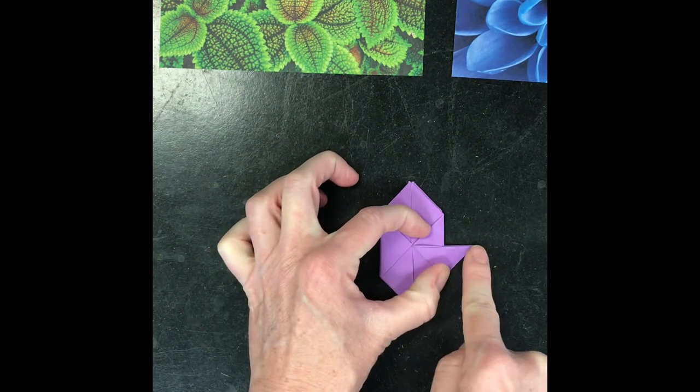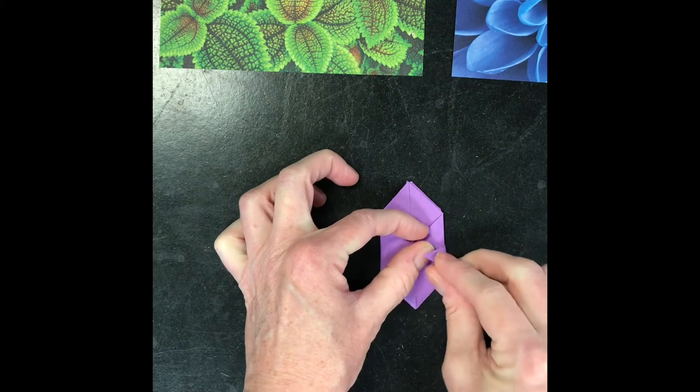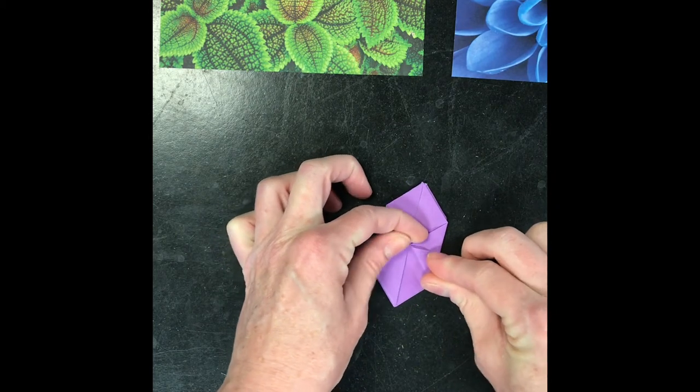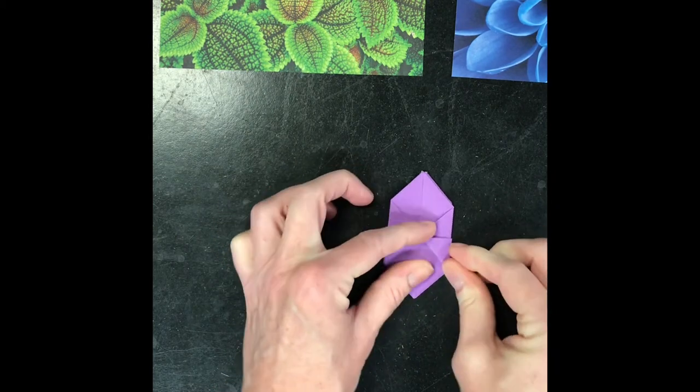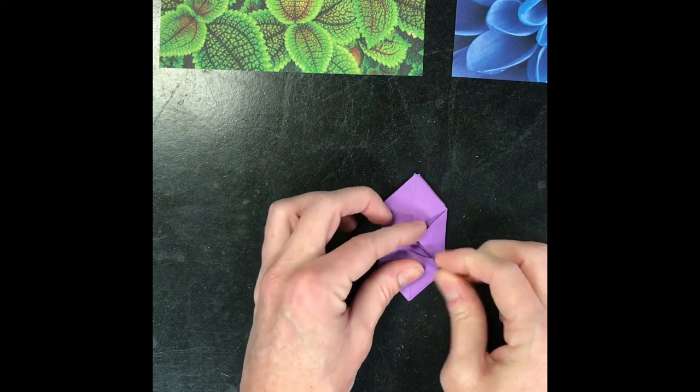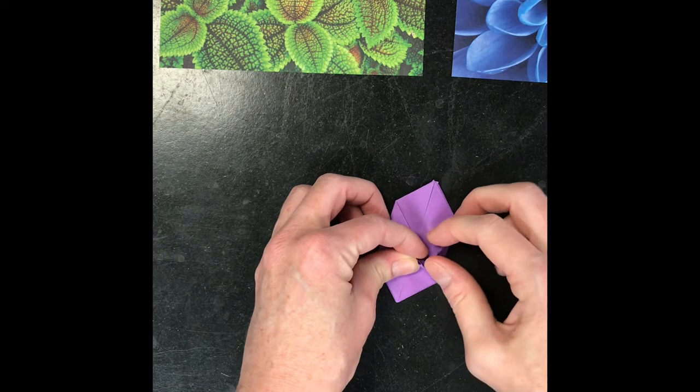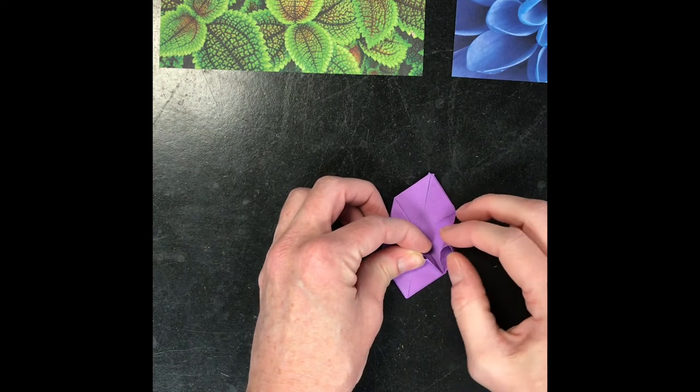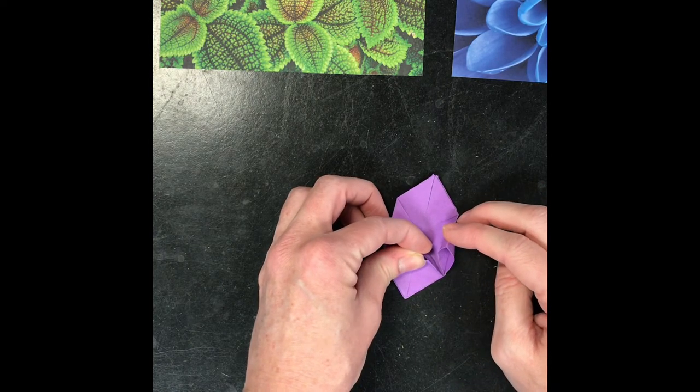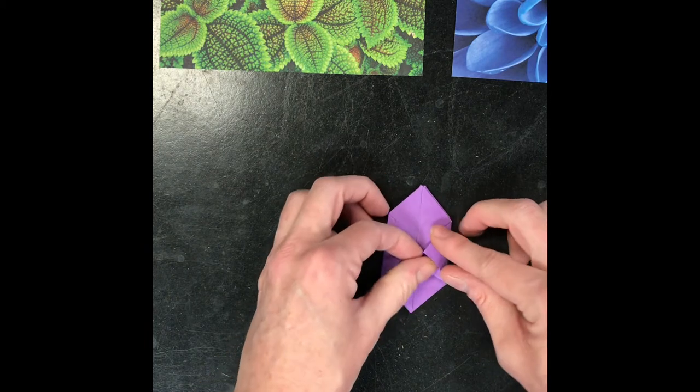Then I'm going to take that outside corner and bring it back to the middle. And what that's going to do is it's going to make a real nice little tab, because inside here is sort of like a little pocket that you can tuck that tab right into.